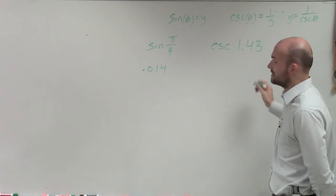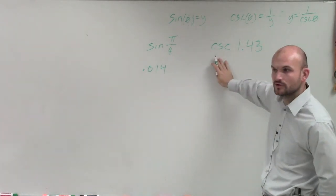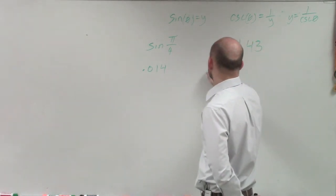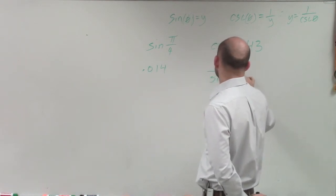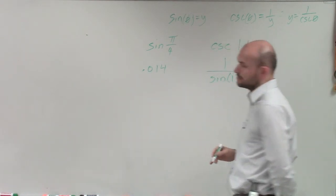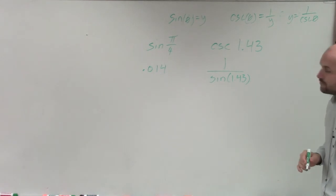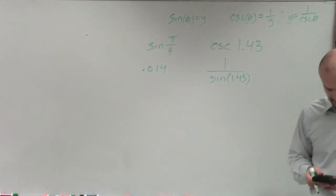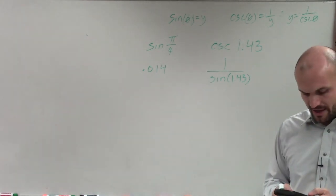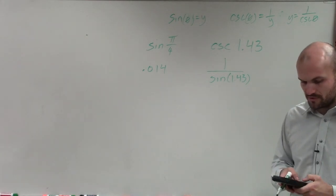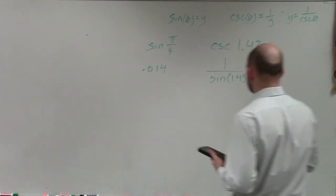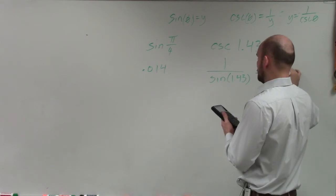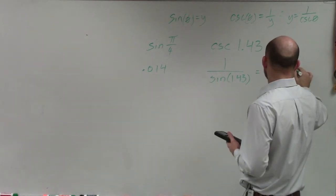So when I'm writing cosecant of θ, I can't evaluate for cosecant, but what I can do is put this over 1 and evaluate for sine. So it would be 1 over sine of 1.43. So what I do is 1 divided by sine of 1.43, and that equals 40.071.